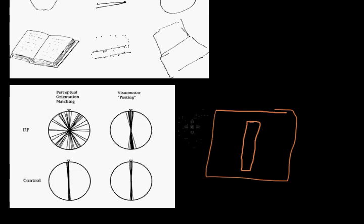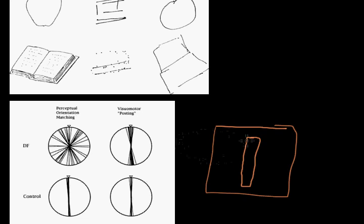In the second scenario, what occurred was that they asked her not to orient the card, but just to post it, just go for it, just post the card through the slot. And what happened is that she got it right most of the time.